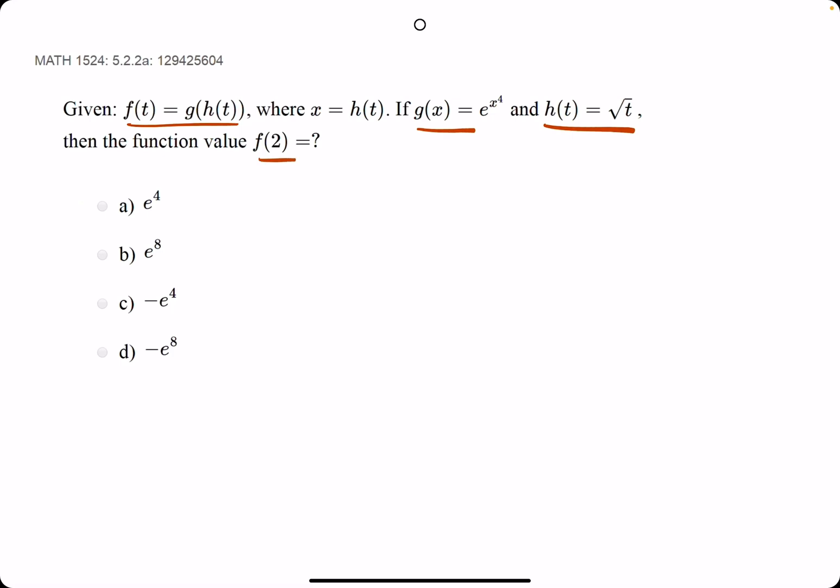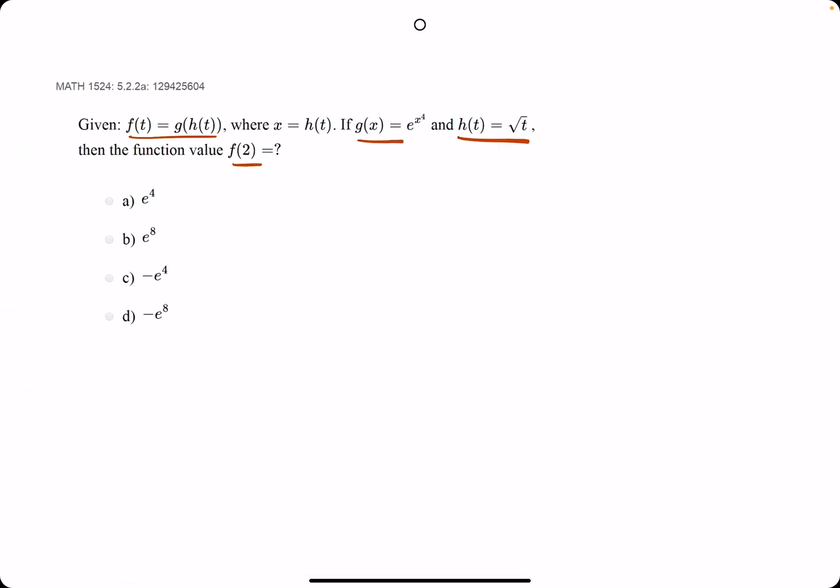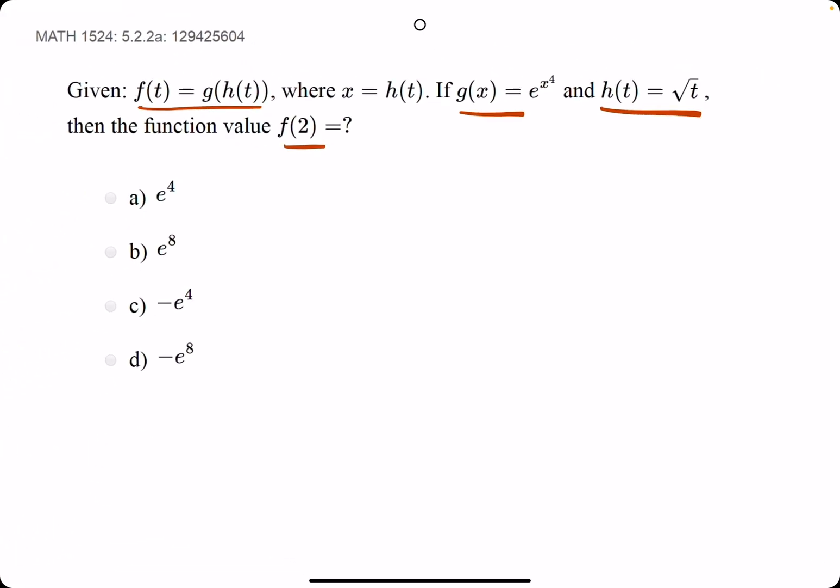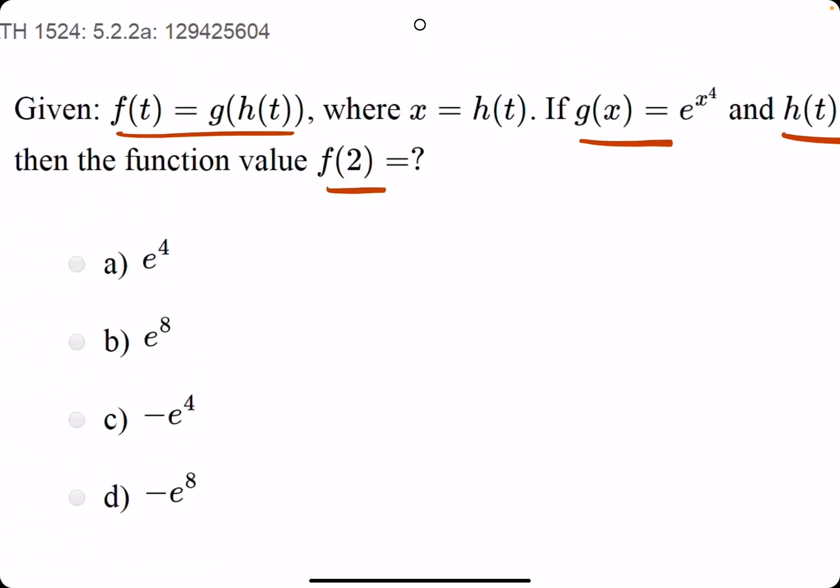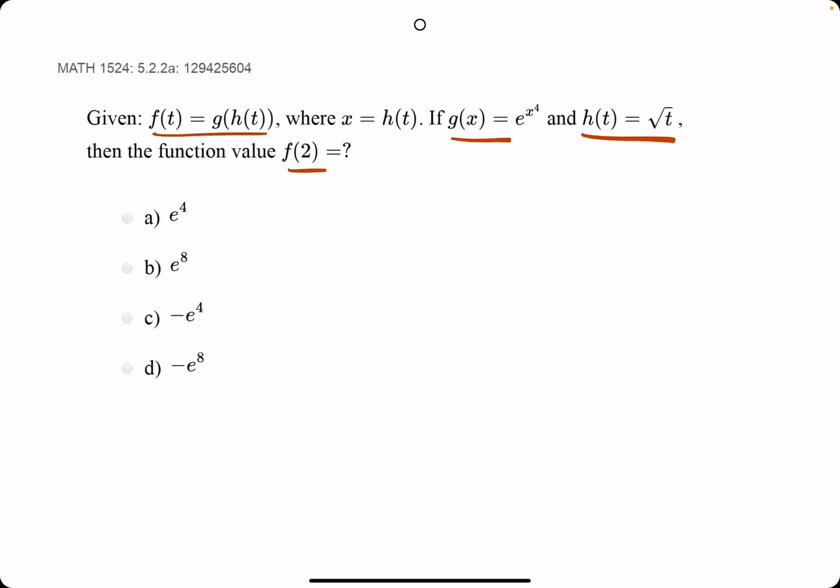So the important pieces here are the g function, the h function, and the fact that we're finding just f of 2, the function value of f when t equals 2.